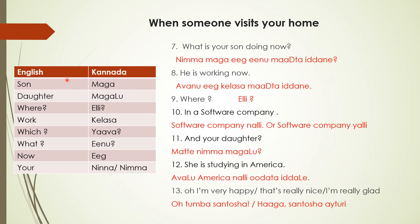Now there are a few more words you must get familiar with. Son is called maga — maga means son, used in most South Indian languages. Daughter is called magalu. Where is elli. Work is kelasa. Which is yaav. What is enu. Now is eega. Your — informal is ninna, formal is nimma. Now let's see the sentences.